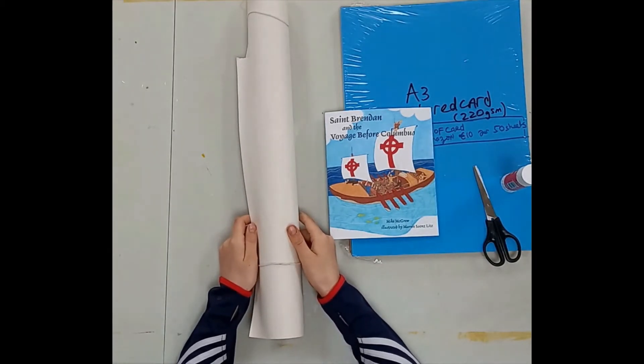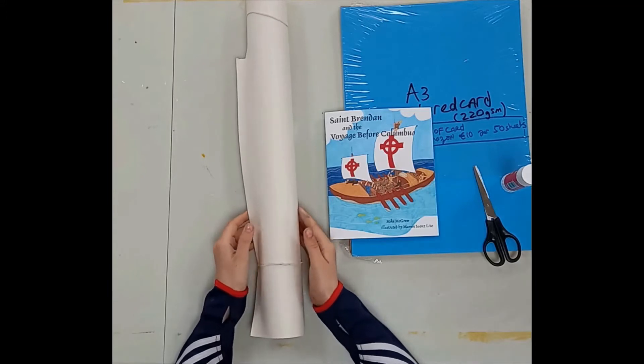First of all you'll need a paper support. The paper support needed for this mural is a roll of wallpaper lining from Woody's or Albany. It's around 7 euros.